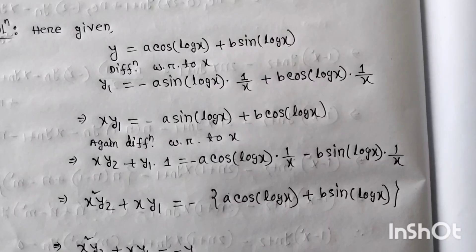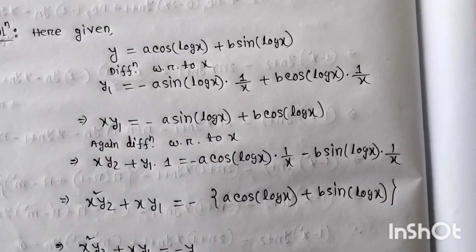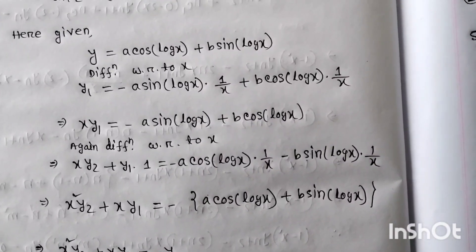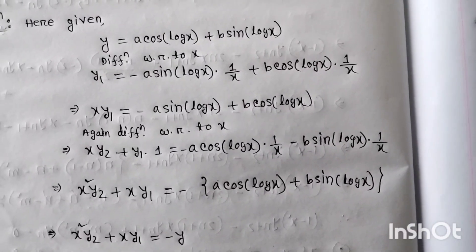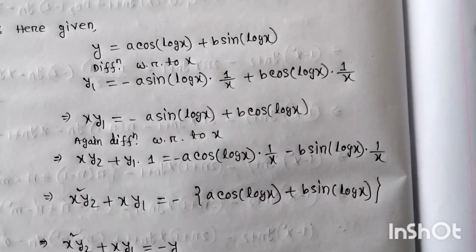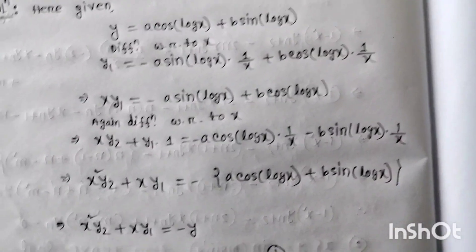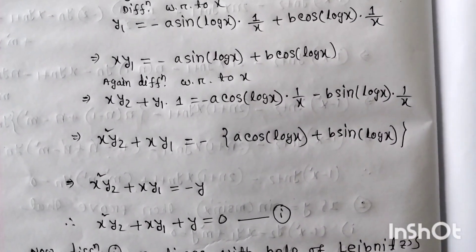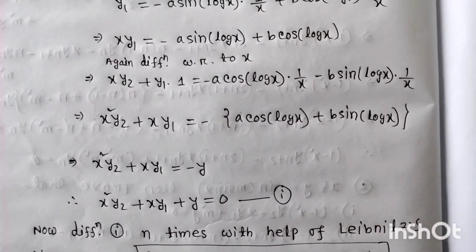After taking the derivative again, we get x·y1 = -a·sin(log x) + b·cos(log x). Taking another derivative and multiplying through, we obtain x²·y2 + x·y1 = -(a·cos(log x) + b·sin(log x)), which equals -y. So x²·y2 + x·y1 + y = 0.